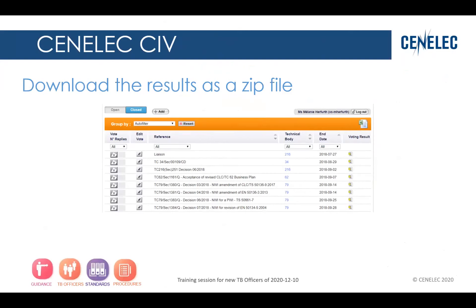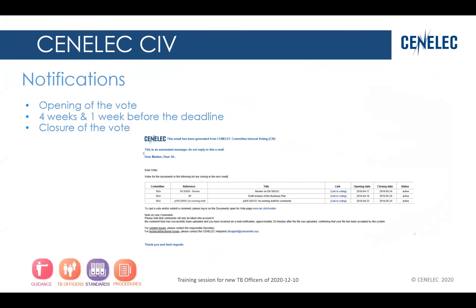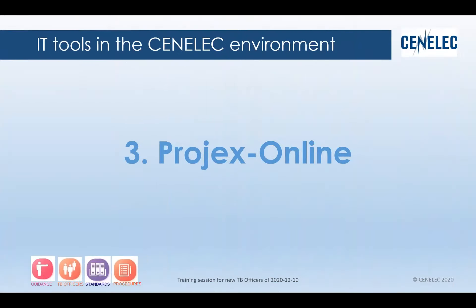When it's finished and closed, you can just download — there's a little zip file that you can get the result from. This closed tab is only allowed to people with the vote owner role, so no one else can go and check. The notification system has one for the opening of the vote, one at four weeks and one week before the deadline — if your survey is long enough. Otherwise, if it's not that length, then you cannot enjoy the notification. And there's one at the closure of the vote. They look like the usual CENELEC notification that you will have from our systems. For the CENELEC CIV, that's it. If you have any questions, please go ahead — we will reply as best as we can.